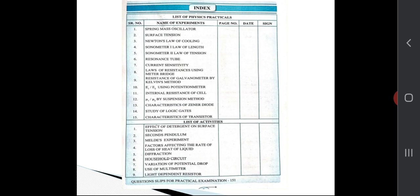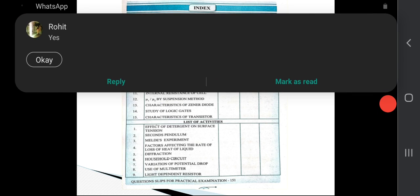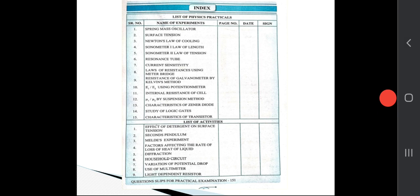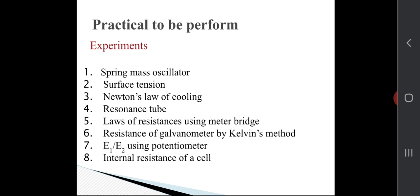In that, you can see these are some activities and experiment list given here. From this list, we are going to perform some of them. This is the practical list and practicals to be performed. These are some practical lists I have given here: spring mass oscillator, surface tension, Newton's law of cooling, resonance tube, law of resistances using meter bridge.